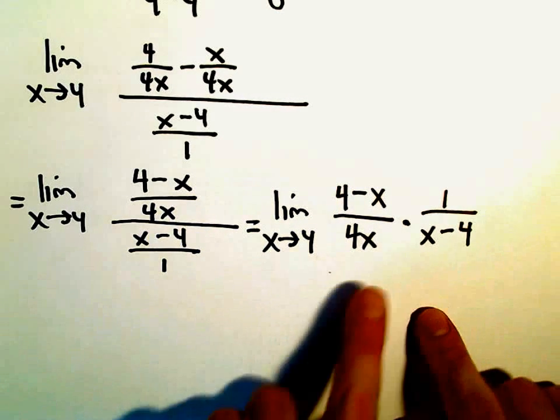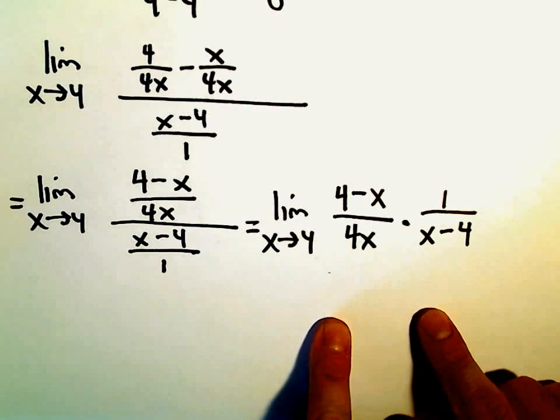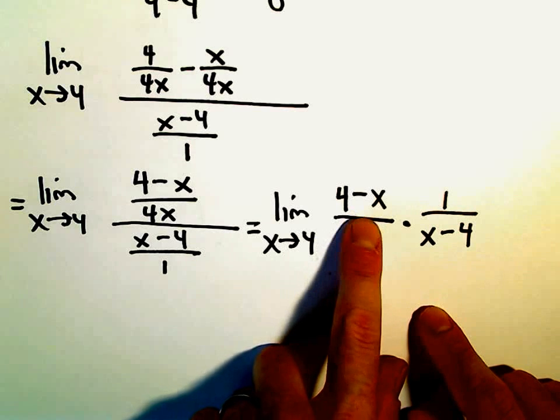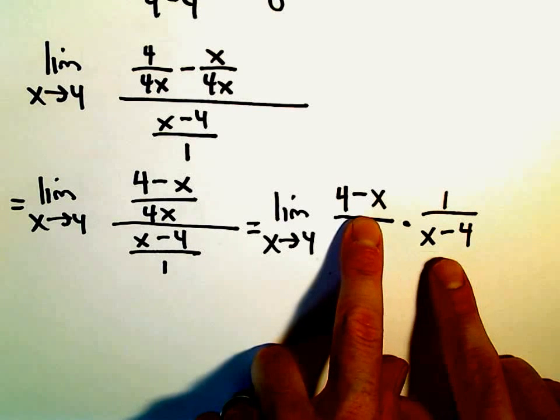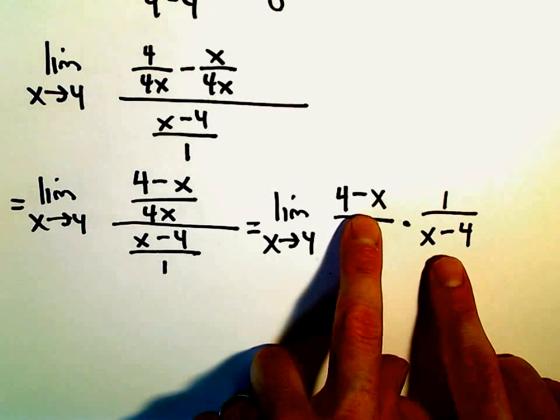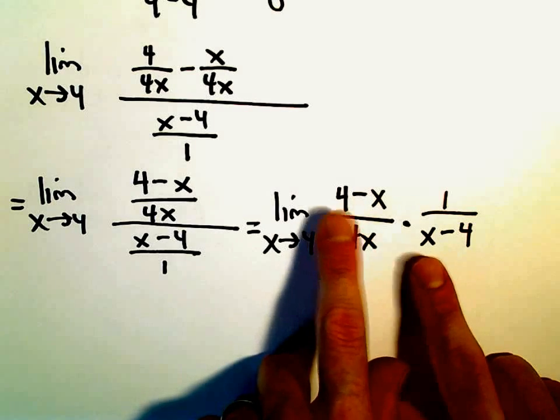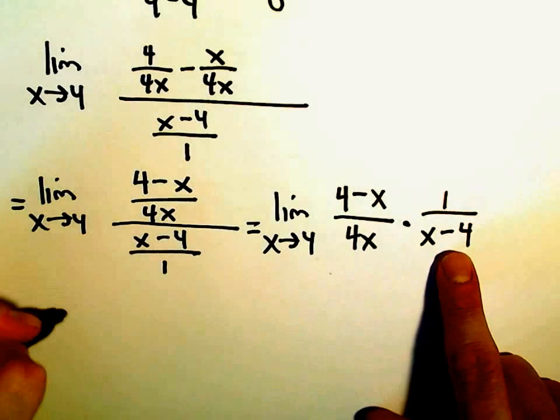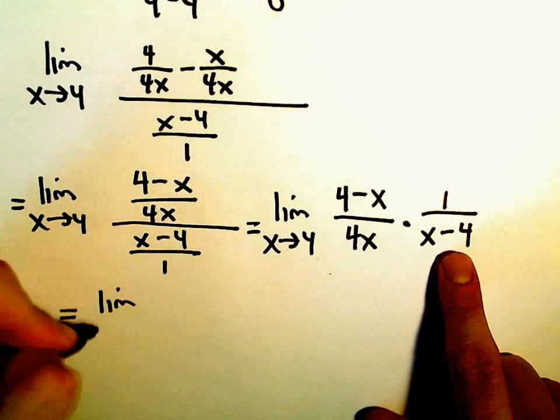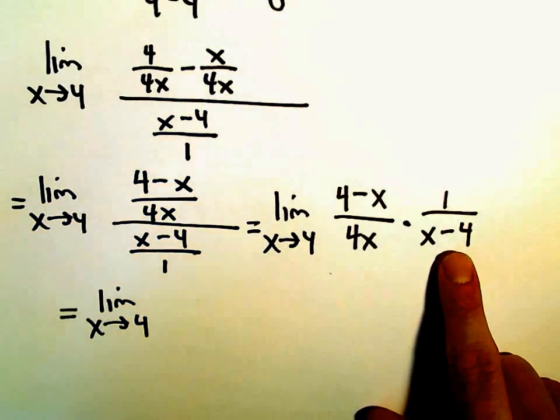Alright, so notice, again, we're trying to simplify things down. We've got a 4 minus x in the numerator and an x minus 4 in the denominator. Those are almost the same. Notice that the signs are just opposite. So what we can do is we can factor a negative out of the numerator or the denominator.